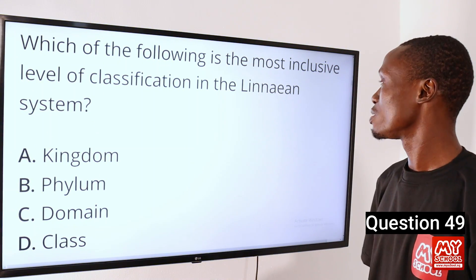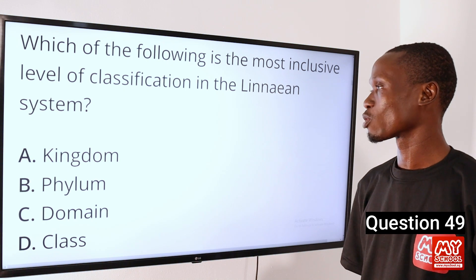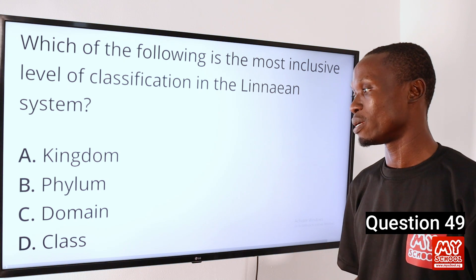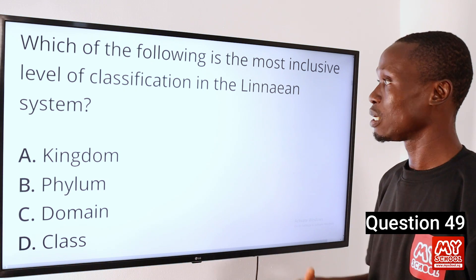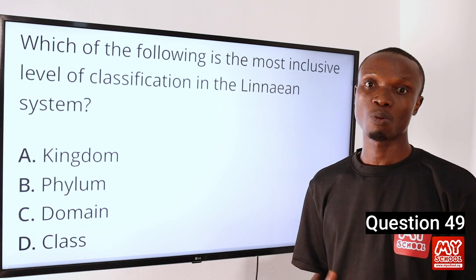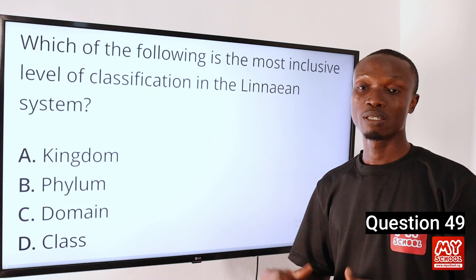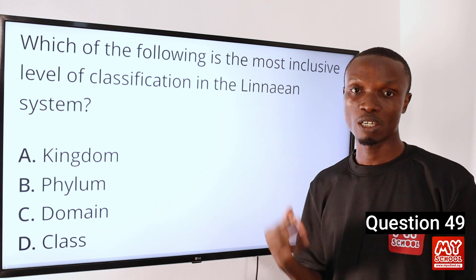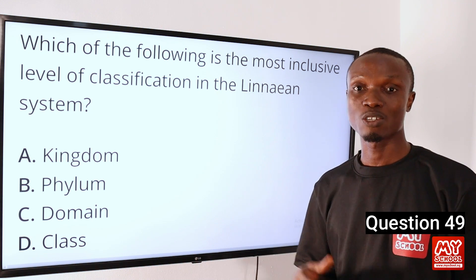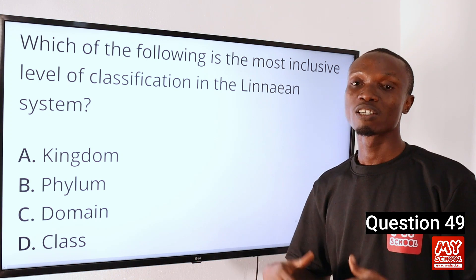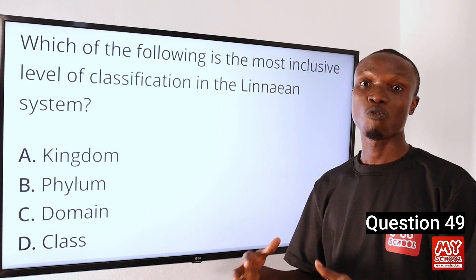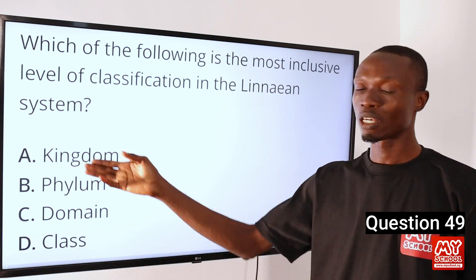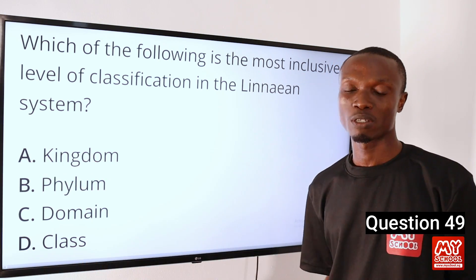Question 49. Which of the following is the most inclusive level of classification in the Linnaean system? A. Kingdom. B. Phylum. C. Domain. D. Class. The Linnaean system of classification was developed by Linnaeus. In this system, he used seven levels of classification which include kingdom, phylum, class, order, family, genus, and species. Of all these levels of classification, the most inclusive is the kingdom. So that makes option A the correct option.